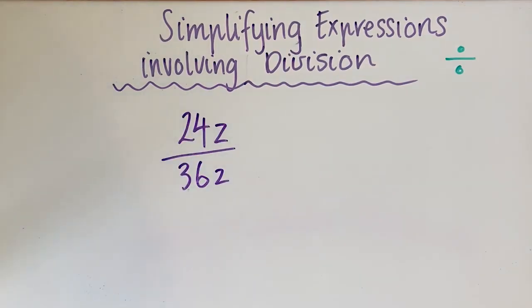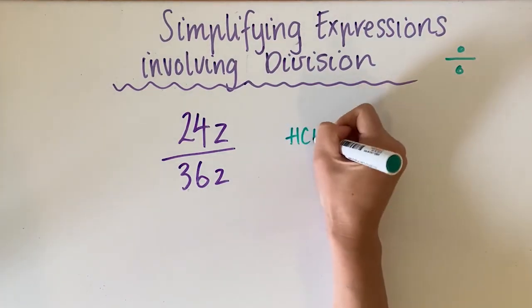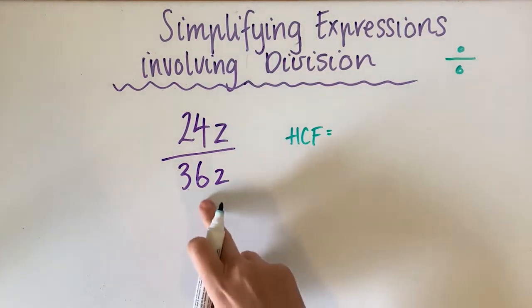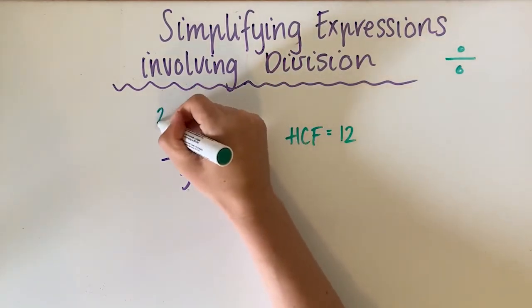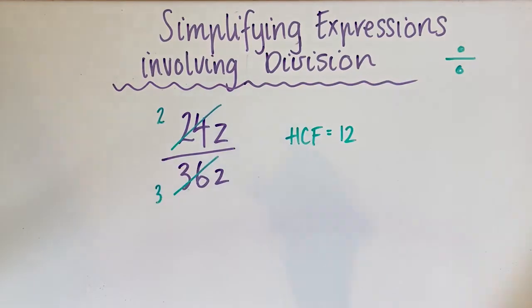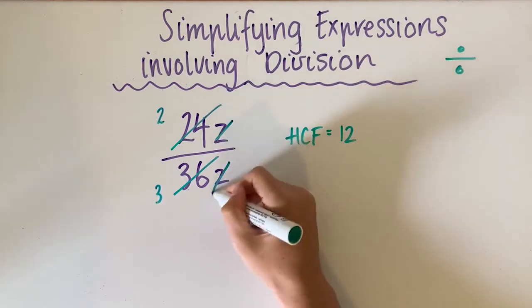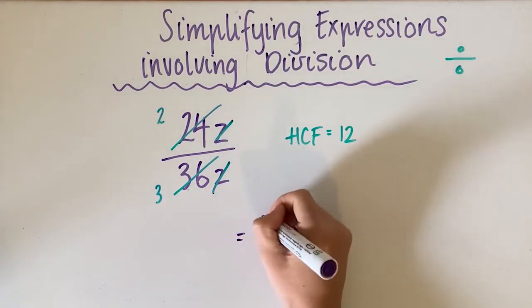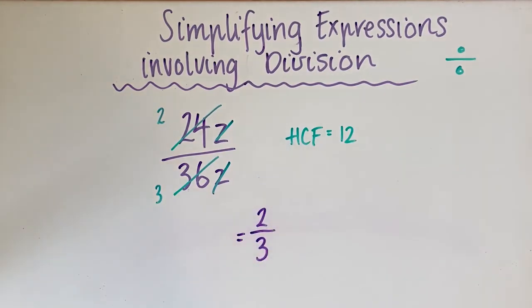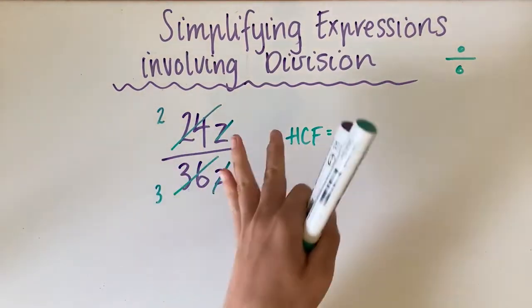For this one we need to find the biggest number that goes into 24 and 36. 24 is the biggest number that goes into 24, but that doesn't go into 36. So the next biggest number that goes into 24 is 12, and that also goes into 36, so the highest common factor is 12. 12 goes into 24 two times, and 12 goes into 36 three times. Now you'll notice there's a pronumeral on the top and the bottom — there's a z on the top and on the bottom. If there's the same thing on the top and the bottom, you can cancel them out. So we're left with 2 over 3, which is two thirds, because we simplified the numbers and cancelled out the pronumerals.